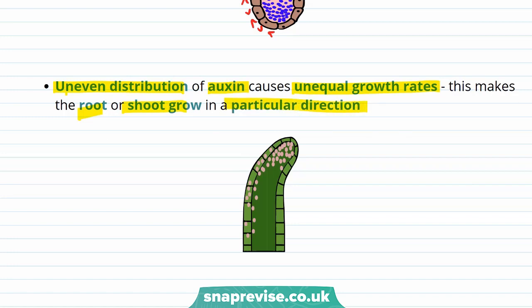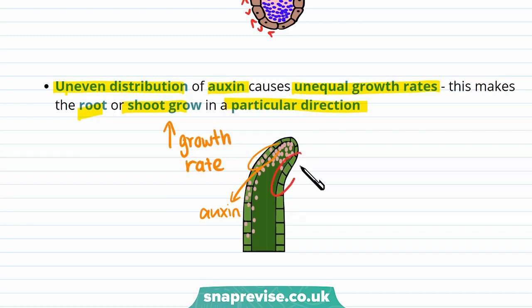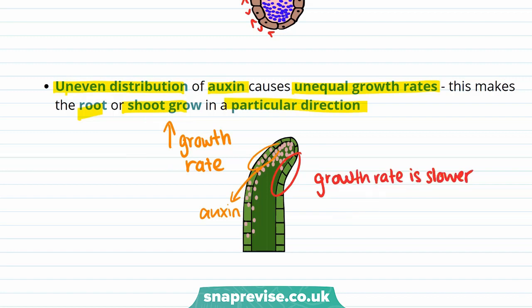These pink dots represent auxin. At the shoot, auxin causes cell elongation and an increase in growth rate on that side. As there's less auxin on the other side of the shoot, growth rate is slower there. Due to these unequal growth rates, the plant will grow in the direction where the growth rate is slower — so in this case the shoot will bend towards the right.